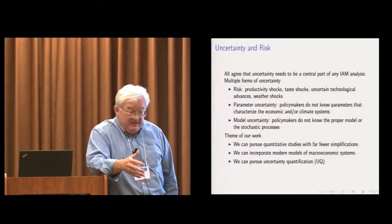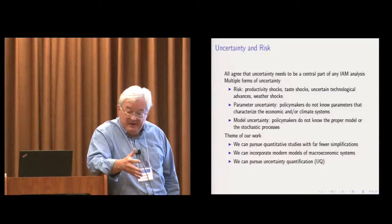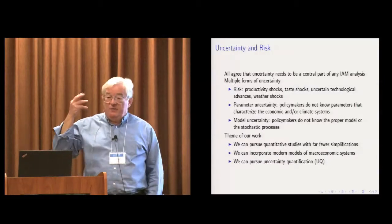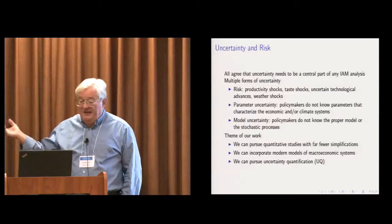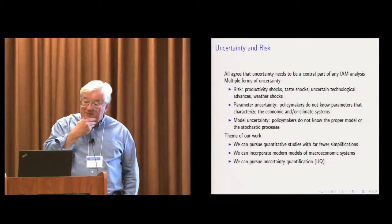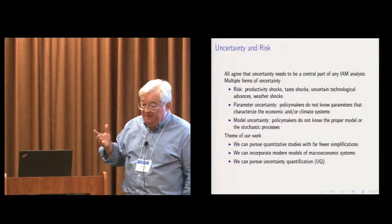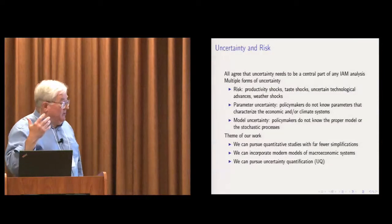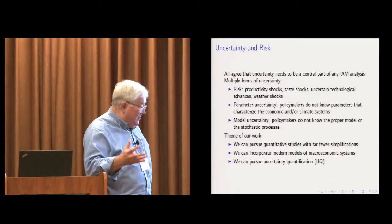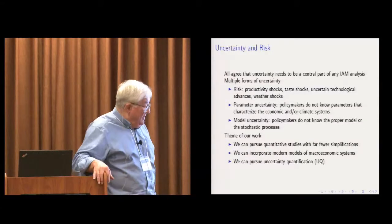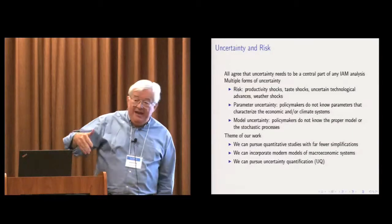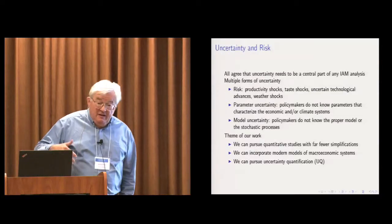That doesn't stop the climate scientists from doing science — they look at these models and compare them and try to learn from the different implications. In economics, the attitude is: we don't know what the right model is, therefore we're not going to look at any of them unless they conform to my opinion. So we have enormous model uncertainty, as well as even within a model, parameter uncertainty. What we're going to do is take one of these models common in the IAM literature — in fact, the basis for the interagency report of the US government about five years ago — and add various kinds of uncertainty to it.